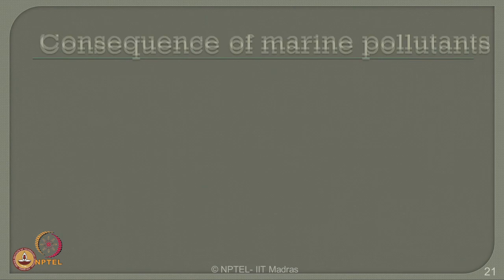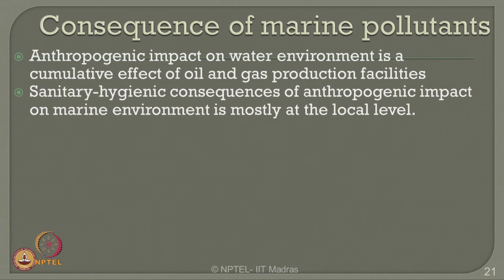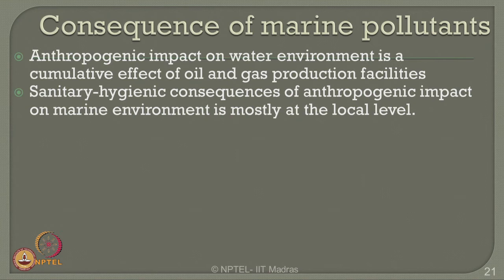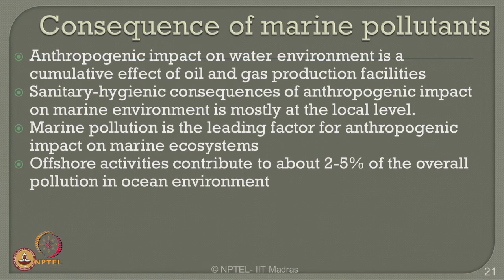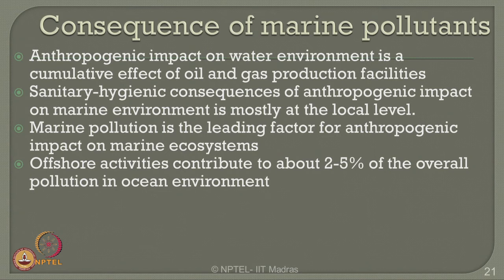The anthropogenic impact on water environment is a cumulative effect caused by oil and gas production facilities installed at sea. Sanitary and hygienic consequences are mostly focused at the local level, and it is advantageous that global distribution has not occurred so far. Marine pollution is one of the leading factors for anthropogenic impact on marine ecosystems from offshore activities, contributing about 2 to 5 percent of overall ocean pollution. Though the number is low, the spread is very rapid, and anthropogenic impact increases concentration in marine coastal areas and shelf zones where about 90 percent of aquaculture resides.